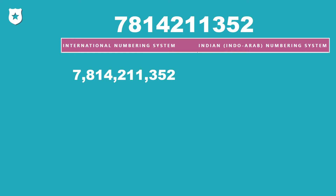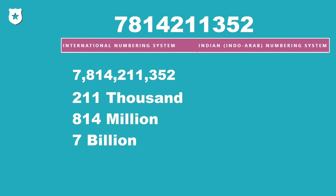As a next step, we will label each group. The first group is 352 — while reading this number, this 352 is the end of the number, so we won't label this group. The next group is labeled as thousand, the next as million, and the next as billion, and so on.